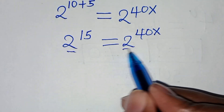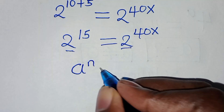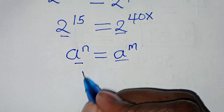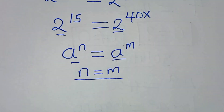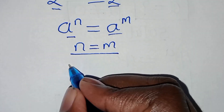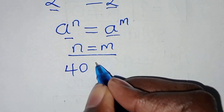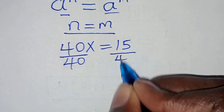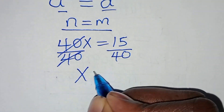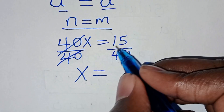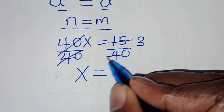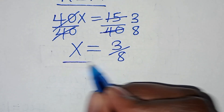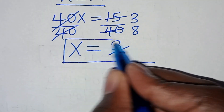Since the bases are common — that is, a to the power of n equals a to the power of m implies n equals m — we have 40x equal to 15. Dividing both sides by 40: x equals 15 over 40. Simplifying by dividing numerator and denominator by 5 gives x equal to 3 over 8. So this is the solution by applying Method 1.